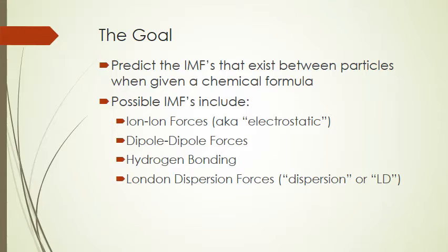As we go through the examples, we'll follow a simple pattern. We start by asking: is this substance ionic or molecular? If it's ionic, it'll be made of a metal bonded to a nonmetal or complex ions. If it's covalent molecular, it'll be made of just nonmetal atoms with no complex ions. If we decide it's ionic, it has ion-ion forces and we're done. If it's molecular, it automatically has London dispersion forces.